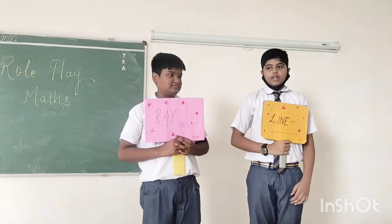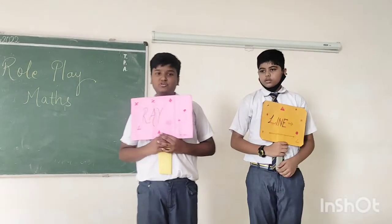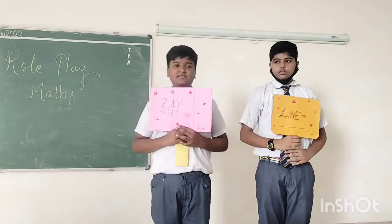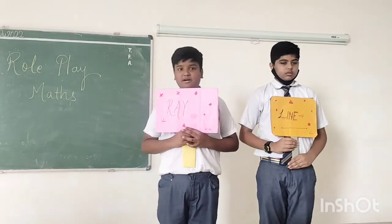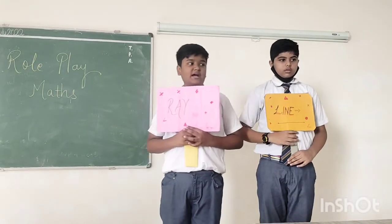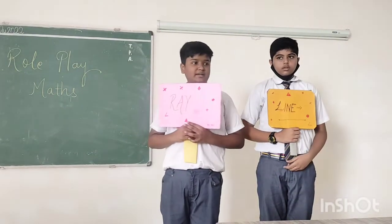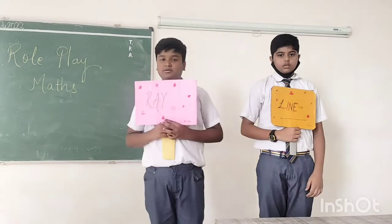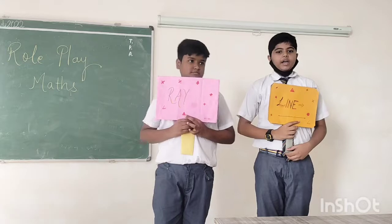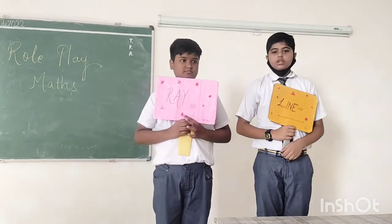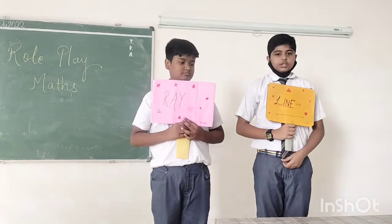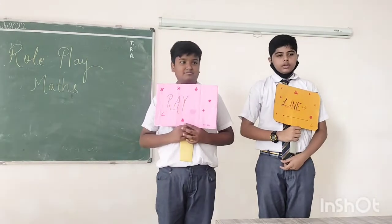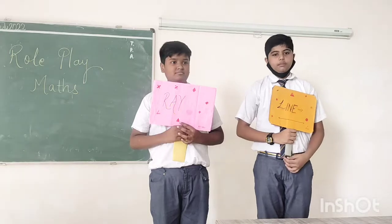I am ray and I am a line. Do you know what a ray is? A ray can be extended from one side and cannot be measured. And without a ray there will be no angles. I am a line and I am endless. I have no start or end and I cannot be measured. And without me no angles, no degrees, or no shapes can be formed. Thank you.